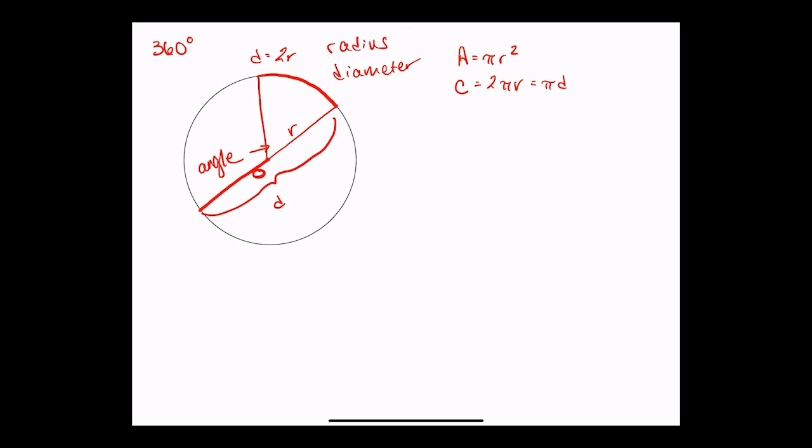So that angle is going to be a portion of those 360 degrees. For example, let's say that our angle here is 60 degrees. That means that that slice or that wedge, which is called a sector, represents 60 degrees out of 360 total degrees, or exactly one-sixth of the circle. In our case, since we have a 60 degree angle. That gives us a couple of extra pieces of information.